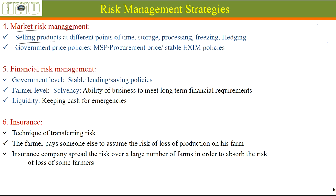Market risk management involves selling products at different points in time — by storing them, processing them in different forms, or freezing them. Prices are generally low just after harvest, so if we can wait and store our produce, prices generally increase, and even after accounting for storage losses, revenue increases. However, because most farmers are marginal, they need money immediately for different purposes and sell immediately after harvesting — this is called a distress sale.